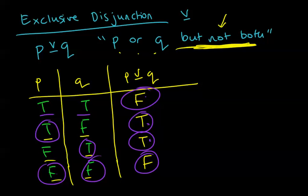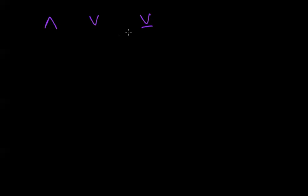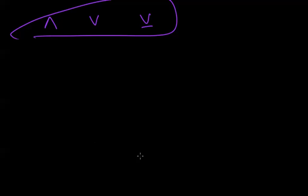So you've got three things to remember from this: AND, OR, and exclusive OR — which means this or that but not both. These are the building blocks for compound propositions. We're going to add to this and do more and more complicated truth tables and statements. Try and commit these to memory.